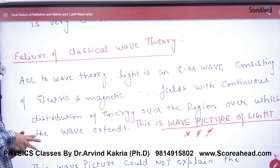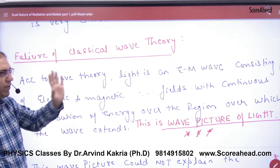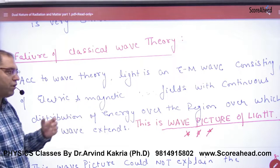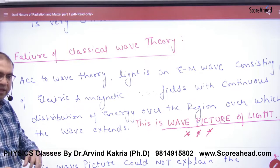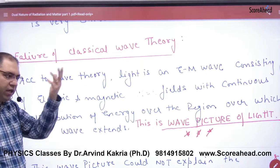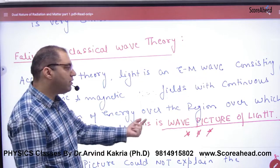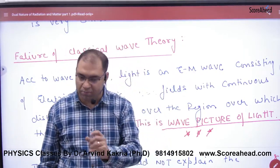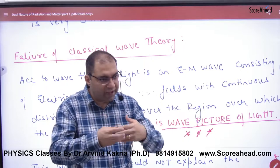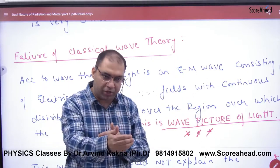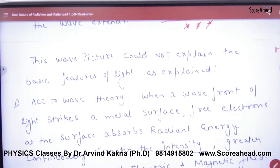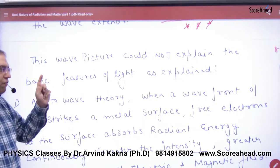According to wave theory, light is an electromagnetic wave consisting of electric and magnetic fields, with continuous distribution of energy over the region — either in the form of an electric field or a magnetic field — distributed over the region through which the wave extends. This is the wave picture of light. So the wave picture means this wave is made of electric and magnetic fields. However, the wave picture could not explain the basic features of light.